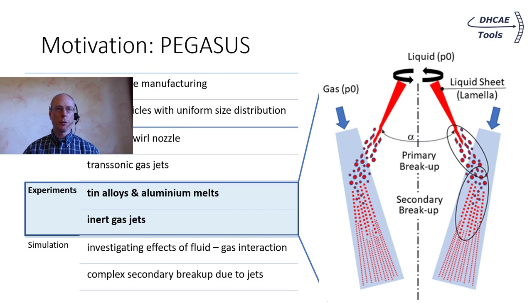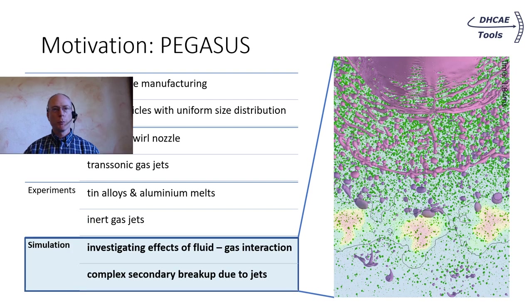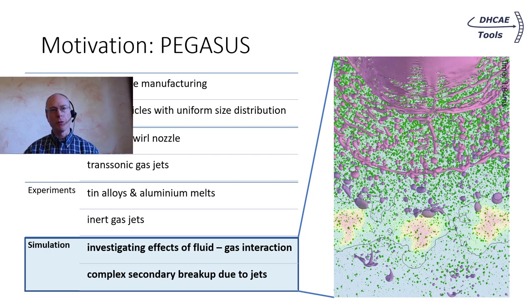In the corresponding experiments, despite water and air tests, tin alloys and aluminum melts are injected into an inert gas. From DHCA eTools we accompany the PEGASOS project with simulations in all stages, from conjugated heat transfer and stress simulations up to detailed analysis of fluid-gas interaction during the breakup of liquid sheets and droplets. In this presentation I will go into detail of the fluid-gas interaction and the required developments.